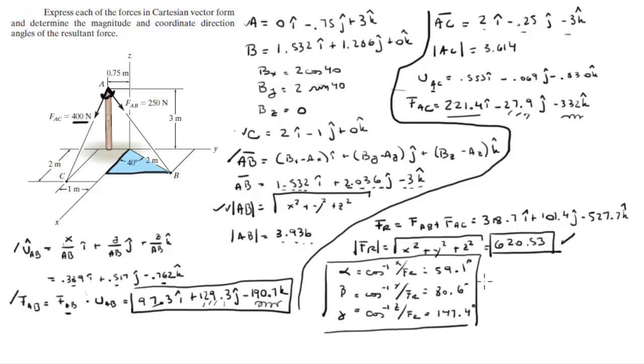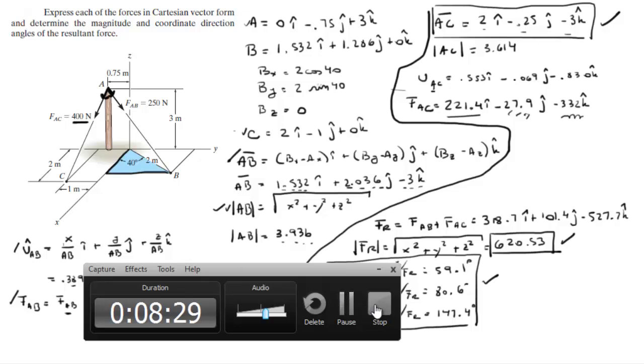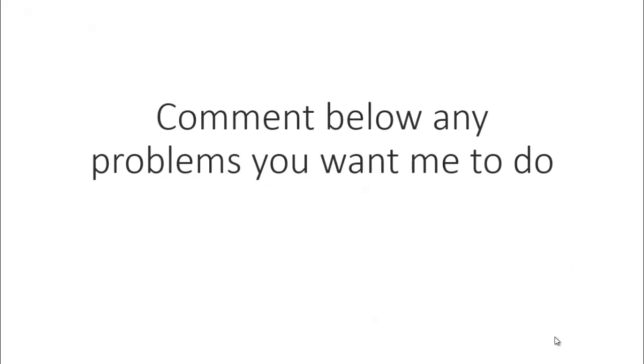Magnitude, angles, Cartesian vector form of AB and Cartesian vector form of AC. Final answer. Please comment below if you want me to do any problems and I'll be happy to help, thank you.